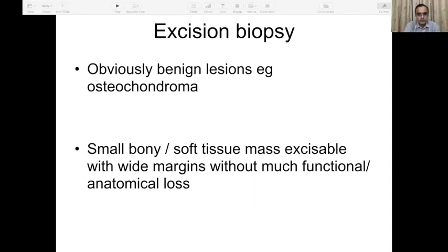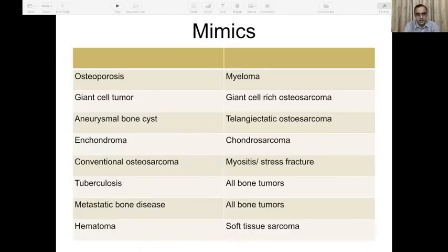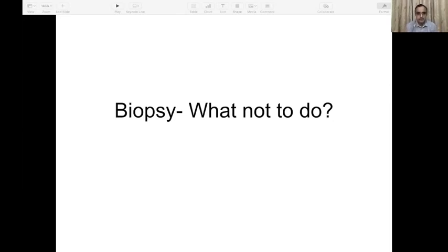Excision biopsy is reserved for the rare case where we need to take out a lesion such as an osteochondroma where we are sure of the diagnosis, or a small bone or soft tissue mass excisable with wide margins without much functional or anatomical morbidity. However, we must beware of mimics: an osteoporotic fracture, a myeloma mimicking osteoporosis, a giant cell-rich osteosarcoma mimicking giant cell tumor, and low-grade osteosarcoma or chondrosarcoma mimicking their benign counterparts. We must alert our radiology and pathology colleagues to these possibilities.